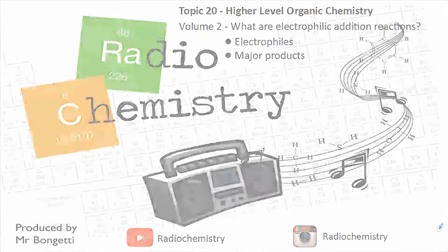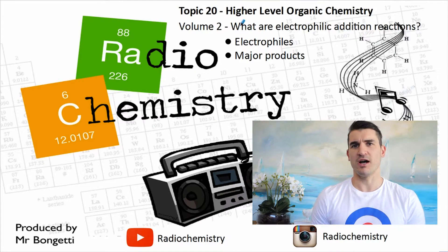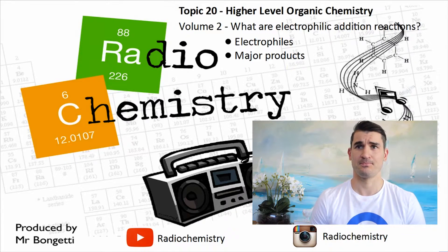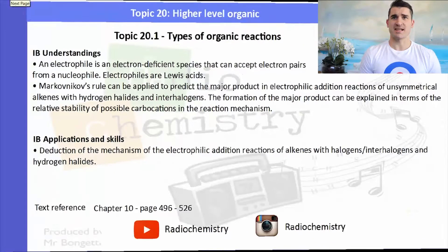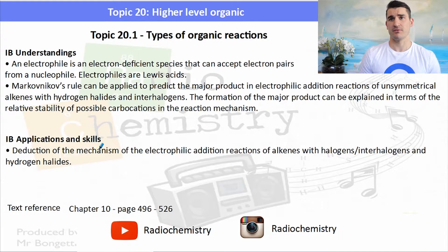If it's your first time here, don't forget to subscribe to the channel and make sure you drop a like if this video helps you out. So in this volume, what are electrophilic addition reactions? We define what an electrophile is and look at the major products of an electrophilic addition reaction. The IB understandings and applications focus on the definition of an electrophile and applying Markovnikov's rule to predict the major products. We also need to look at the mechanism for an electrophilic addition reaction of an alkene.